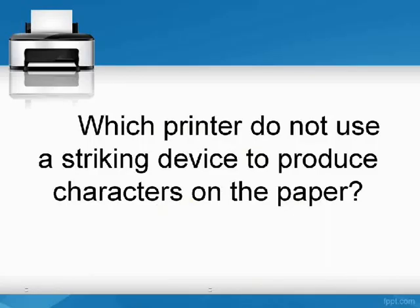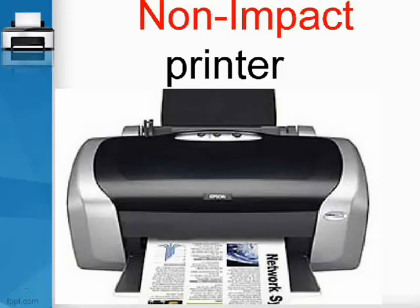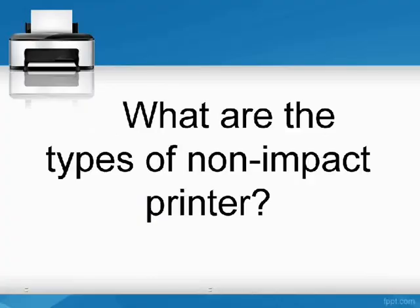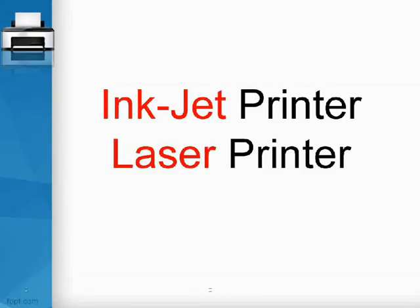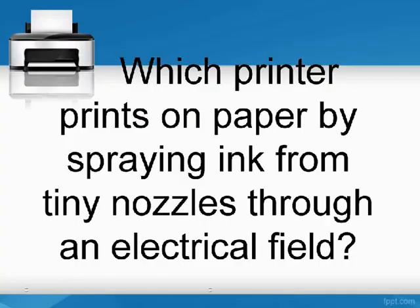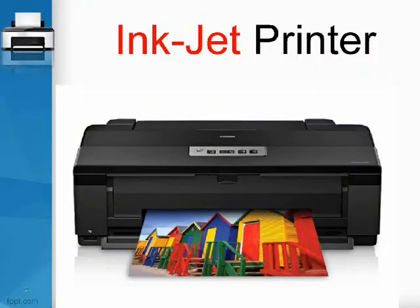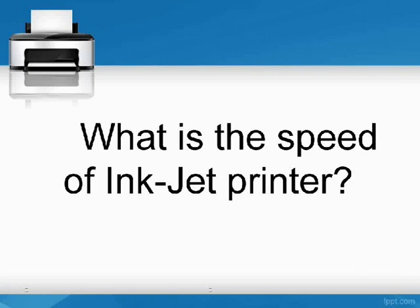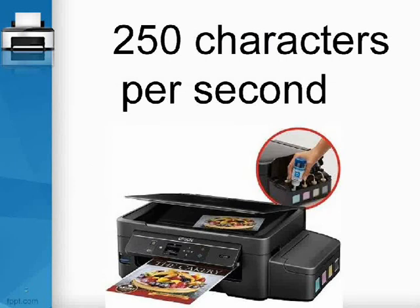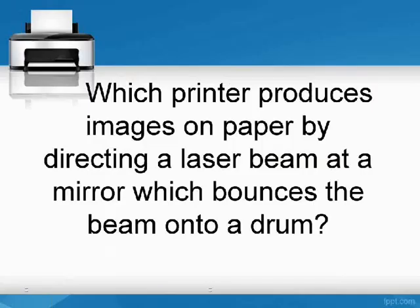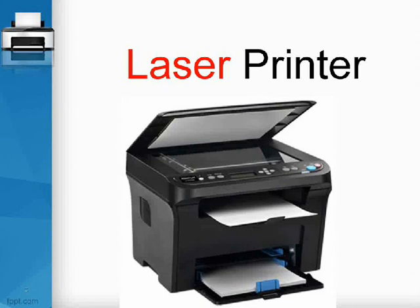Printers that do not use a striking device to produce characters on paper are called non-impact printers. The types of non-impact printers are inkjet and laser printers. The inkjet printer prints on paper by spraying ink from tiny nozzles through an electrical field, at a speed of 250 characters per second. The laser printer produces images on paper by directing a laser beam at a mirror, which bounces the beam onto a drum.